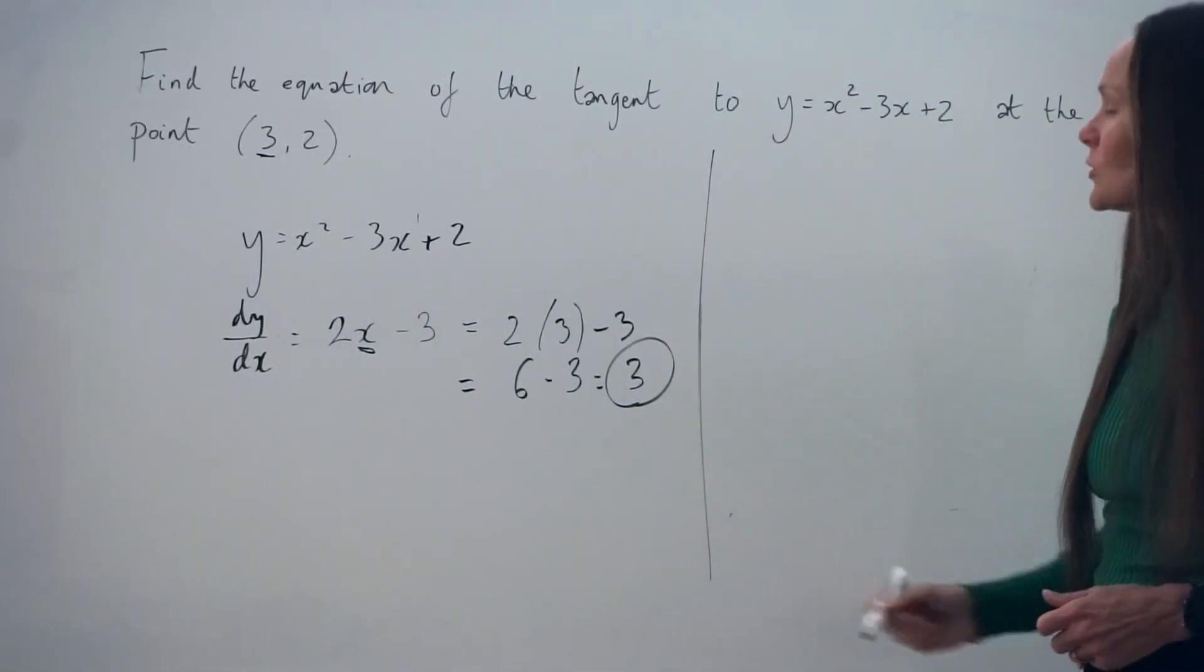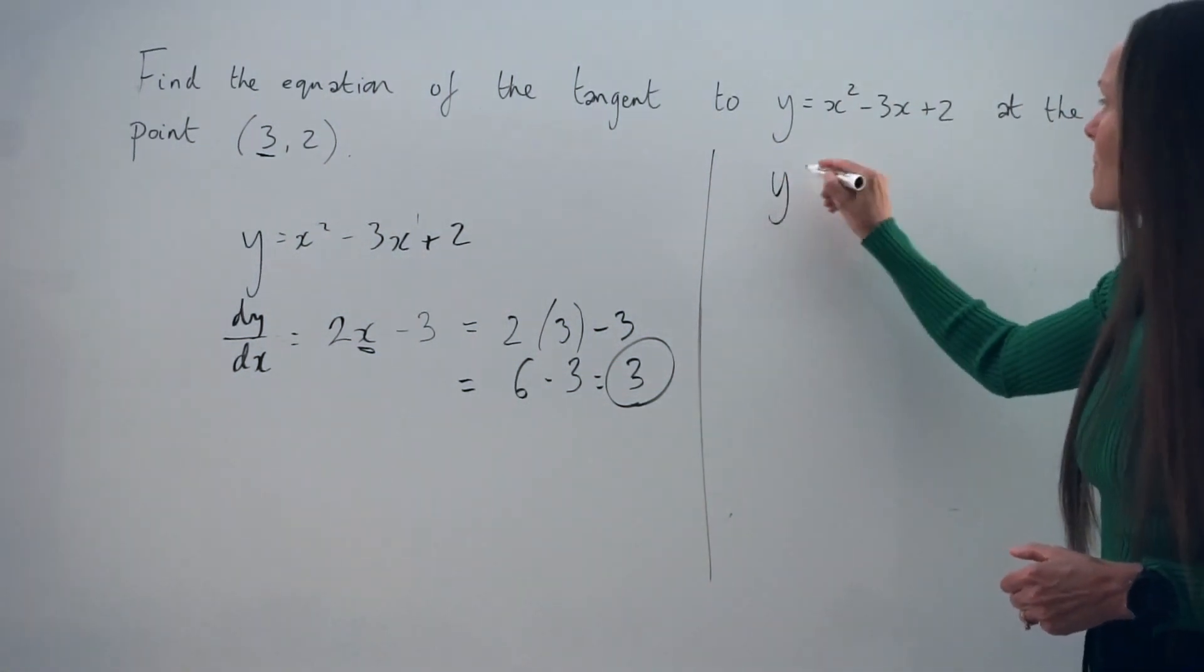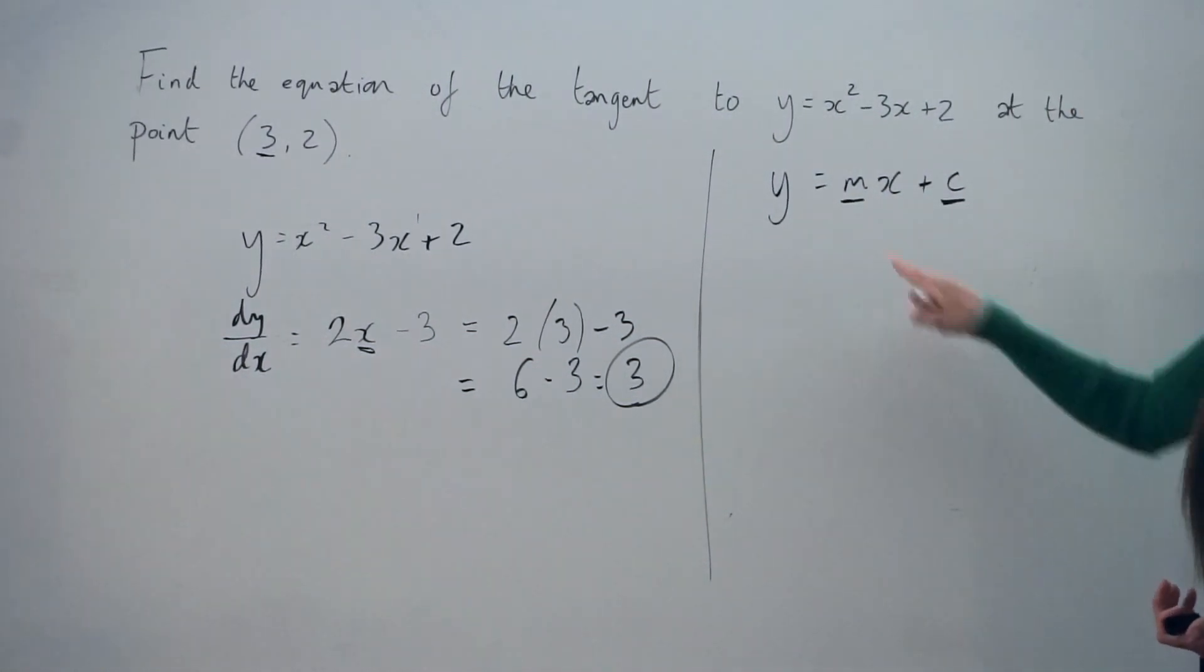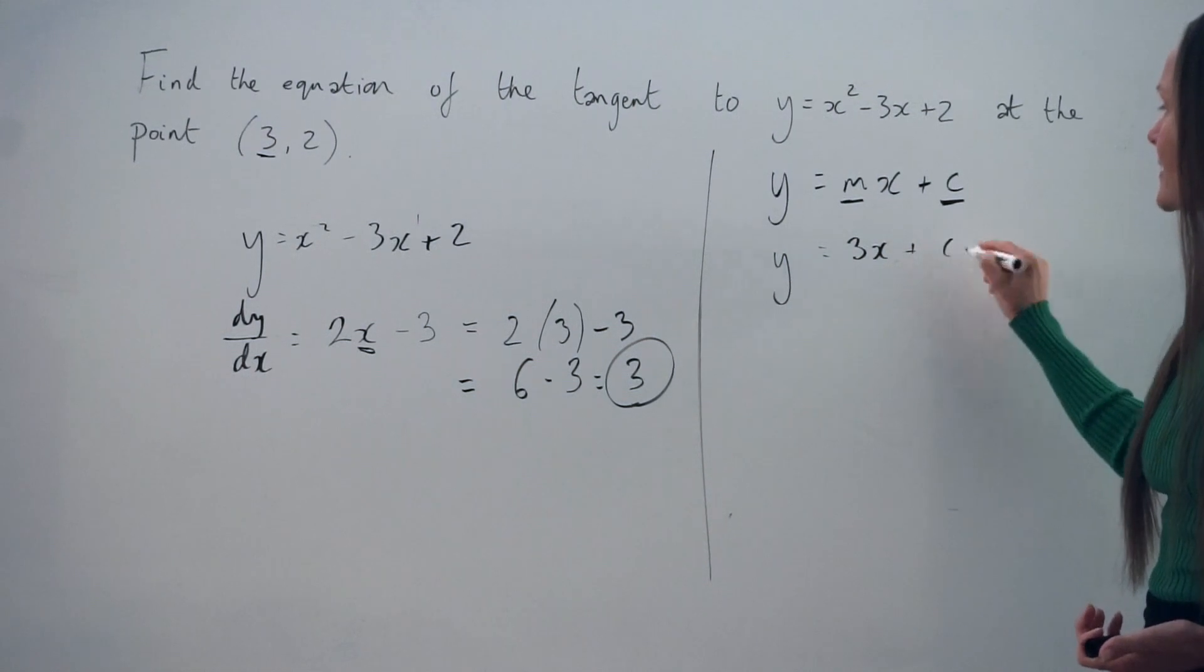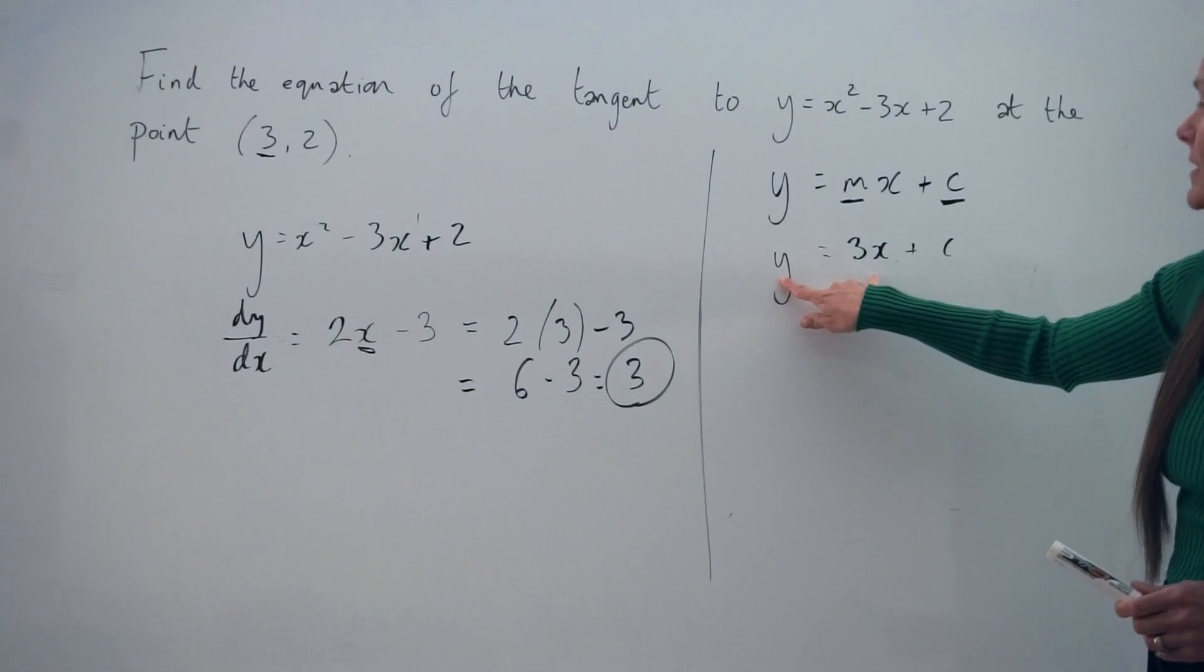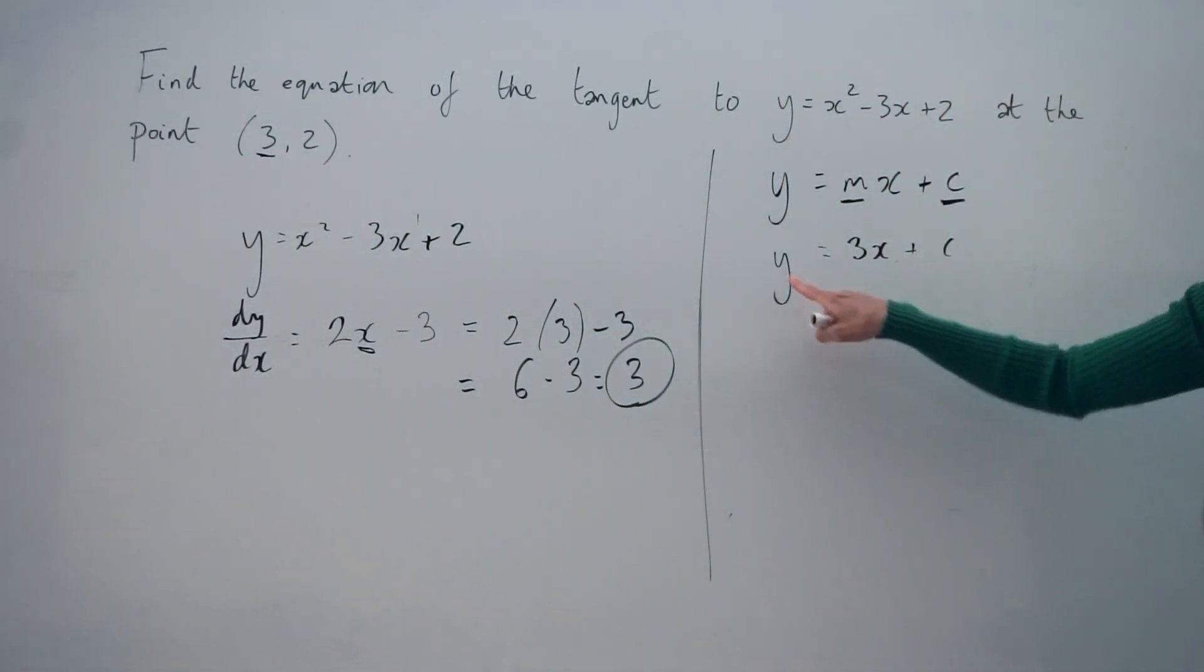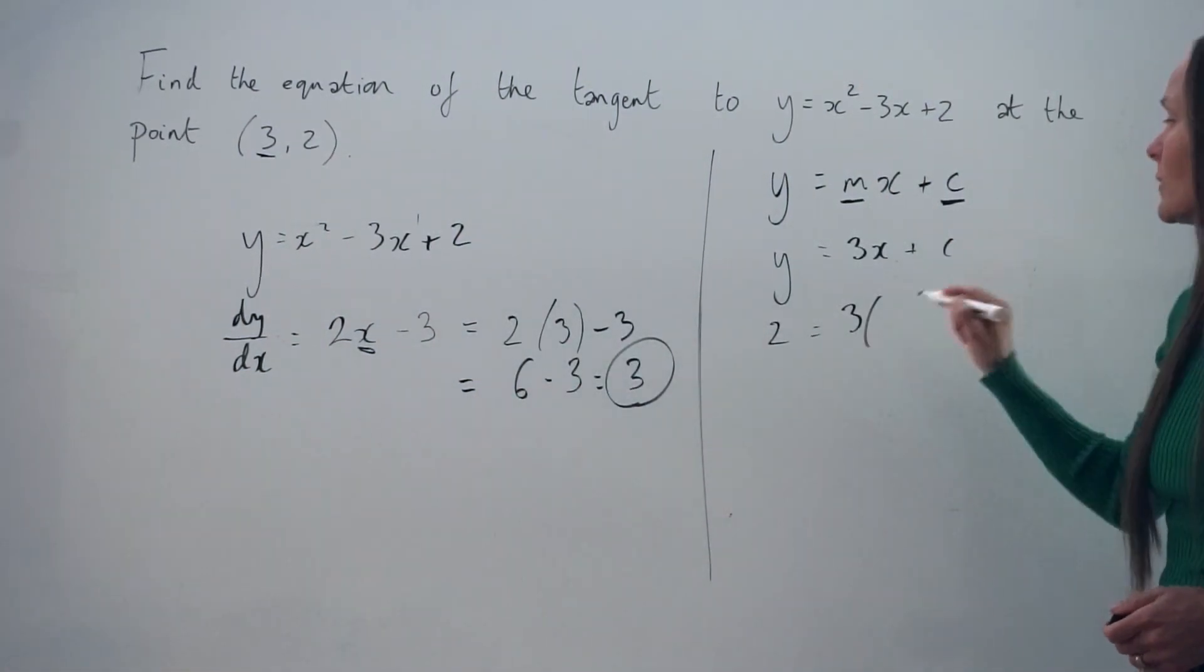So now I want you to think of the standard equation for a straight line, y equals mx plus c. Where m is always the gradient of the straight line and c is what we call the y-intercept. So far, we know the gradient, m. So we have y equals 3x plus c in this equation. And now to work out the y-intercept c, we need to insert a set of coordinates, x and y. And we're given a set of coordinates at the beginning of the question, 3, 2.